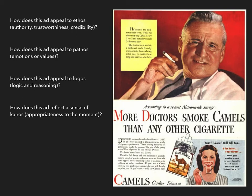'If you're a Camel smoker, this preference among doctors will hardly surprise you. If you're not — well, try Camels now.' Off to the right is a picture of a young woman with a T transposed over her face with the text: 'Your T-zone will tell you. T is for taste, T is for throat. That's your proving ground for any cigarette. See if Camels don't suit your T-zone to a T.'